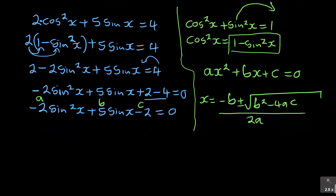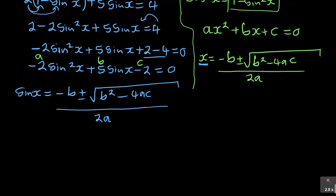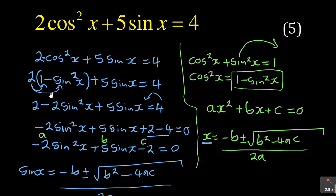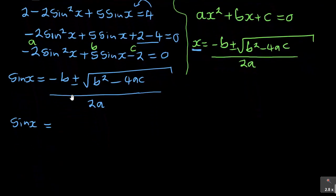Remember, I'm not solving for x — I'm solving for sine x. So I write: sine x equals negative b plus or minus square root of b squared minus four ac, all over two a. There are many ways of solving this — factorizing, product-sum method — but for Grade 11 and 12, I encourage the quadratic formula. Let me verify: b is 5, a is negative 2, c is negative 2.